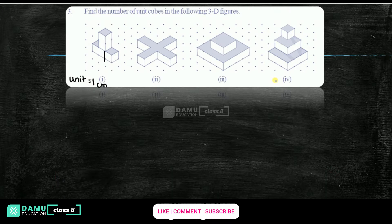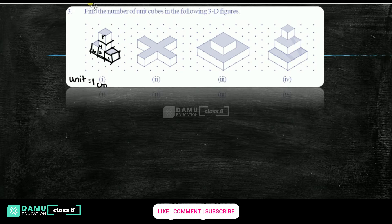Here 1 thing, then here 2. If you do like this, so how many cubes will come? Here only 1, 2, 3, then here also 4, 5. So how many number of unit cubes here? First one: 5 unit cubes.